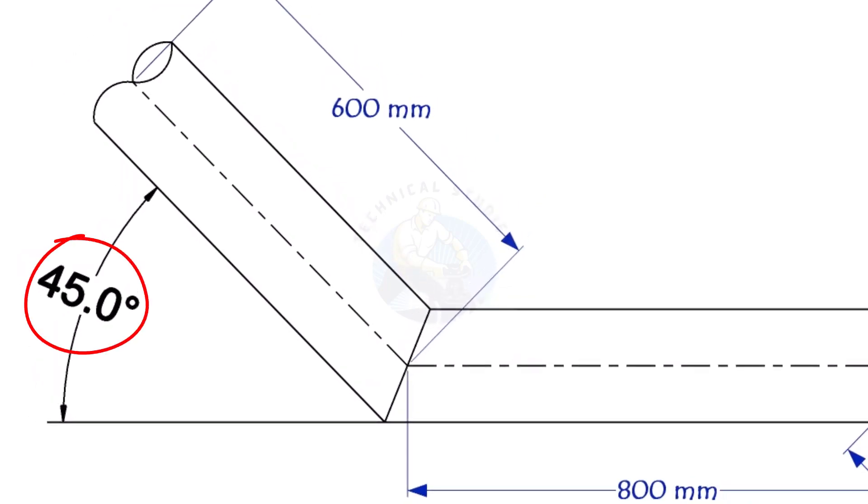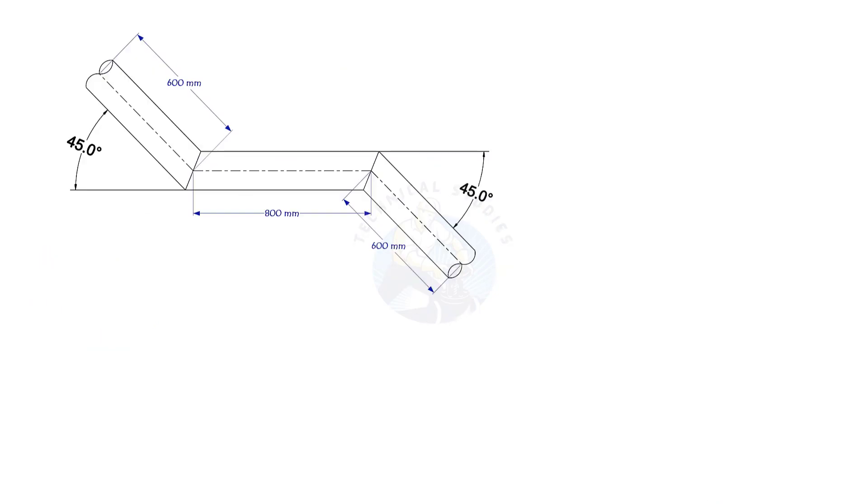The angle of the miter is 45 degree. This method is suitable for cutback of any degree. The outside diameter of a 6 inch pipe is 168.3 millimeters.